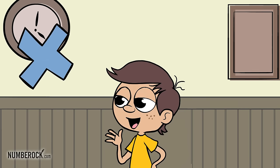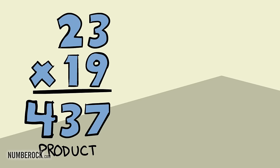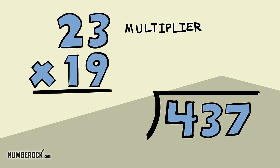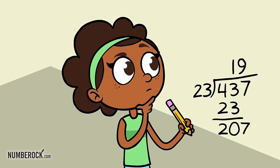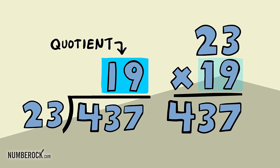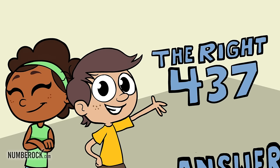When we do long multiplication, we check it with the inverse operation. The product becomes the dividend, the divisor is the multiplier or multiplicand. Then computing with precision, we do the long division. If the quotient is the other factor, then we know we've got the right answer.